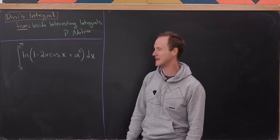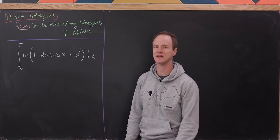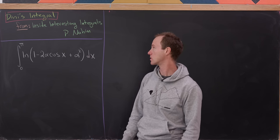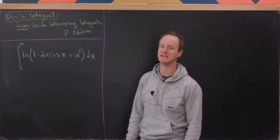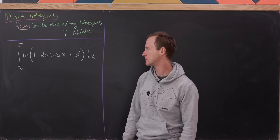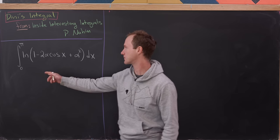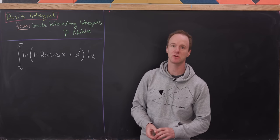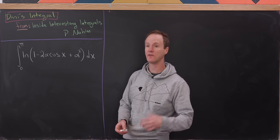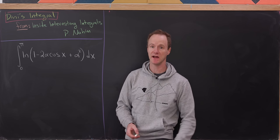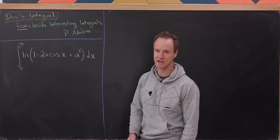Today we're going to look at a really nice integral from a pretty classic integral book called Inside Interesting Integrals, and this is called Deeney's Integral. It's the integral from 0 to pi of the natural log of 1 minus 2 alpha cosine x plus alpha squared, dx.